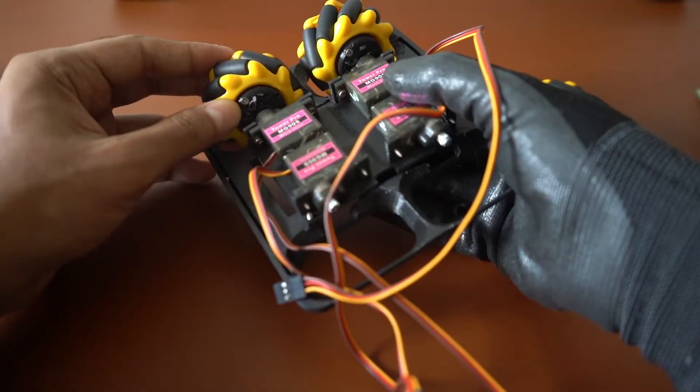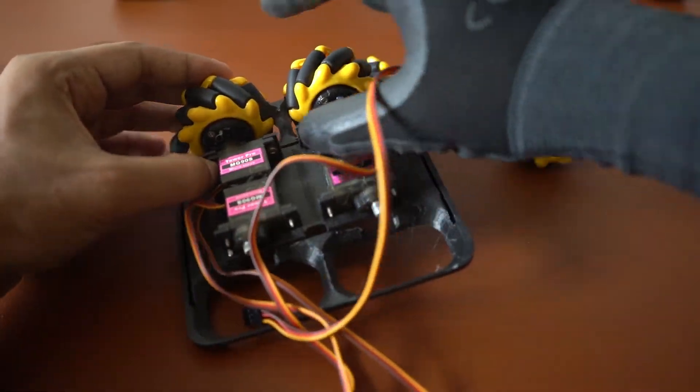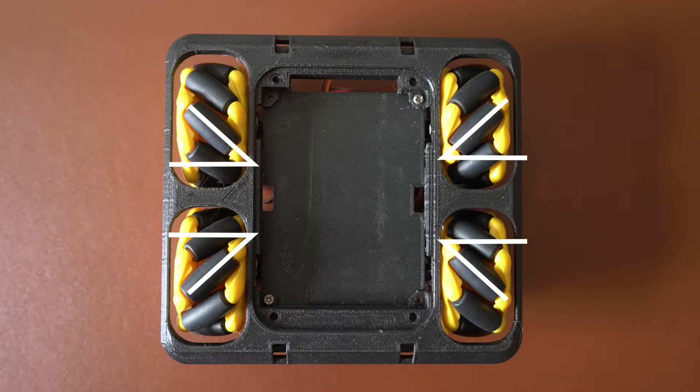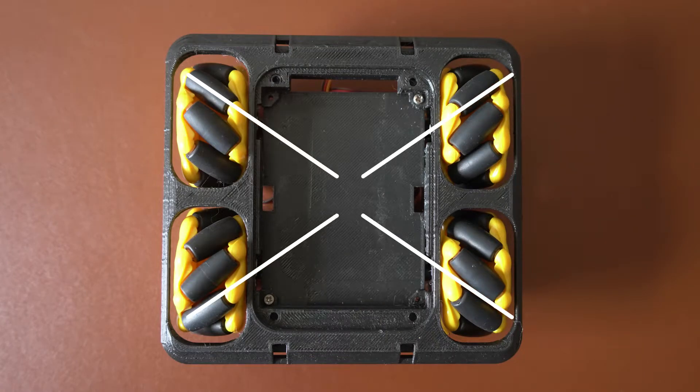We use 4 wheels. These wheels cancel the other components of the forces, and we get the desired movement. Notice the roller angles - the roller's axis of rotation points to the center, forming an X shape.